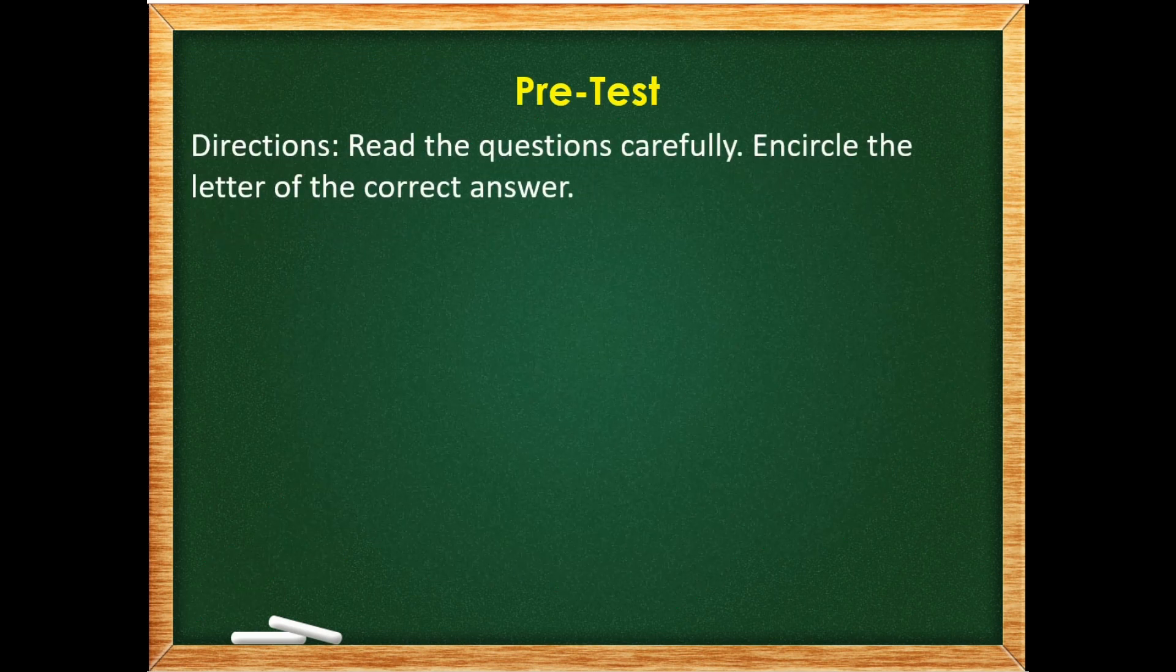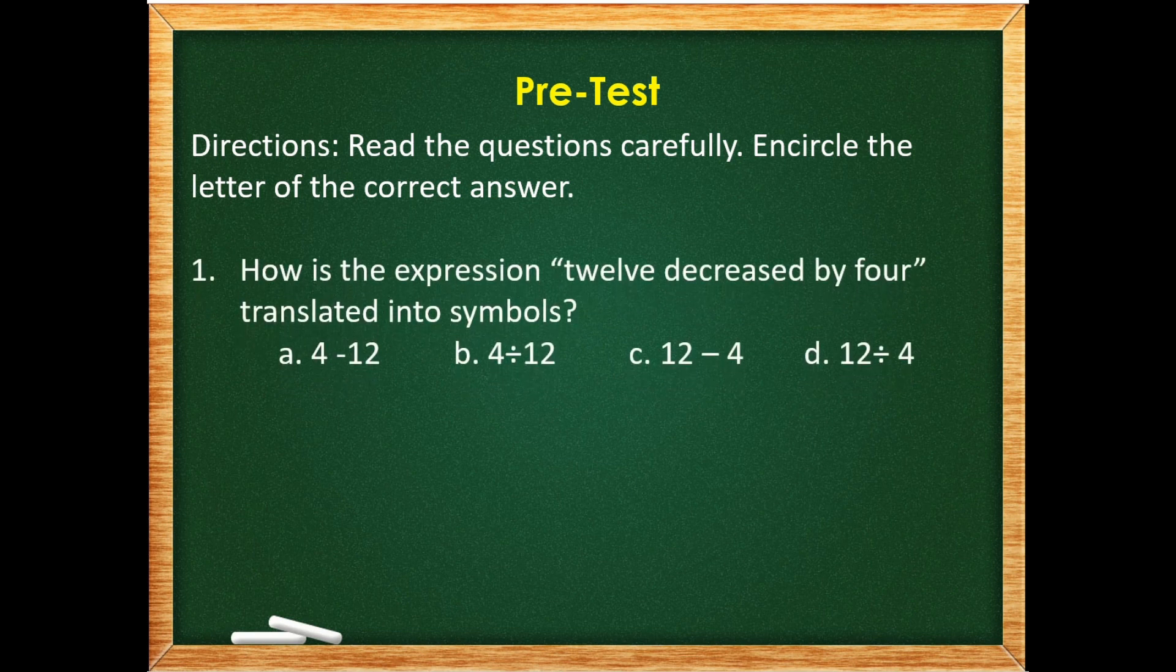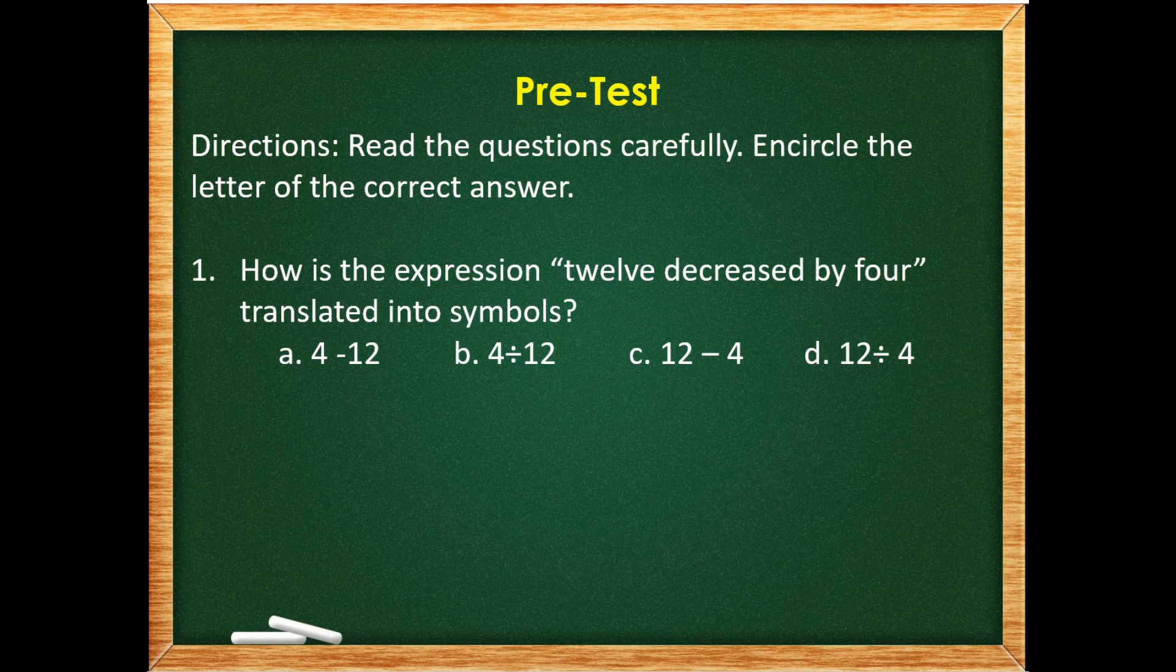Now, let us try out how much you already know about our topic for today. Let us answer the following questions. Number 1. How is the expression 12 decreased by 4 translated into symbols? A. 4 minus 12, B. 4 divided by 12, C. 12 minus 4, or D. 12 divided by 4.